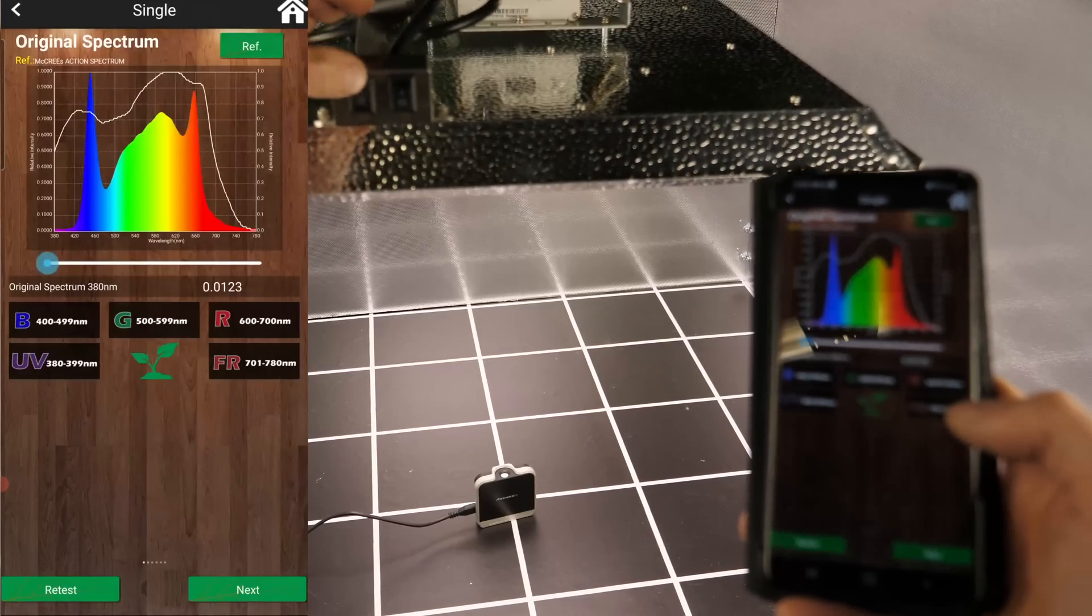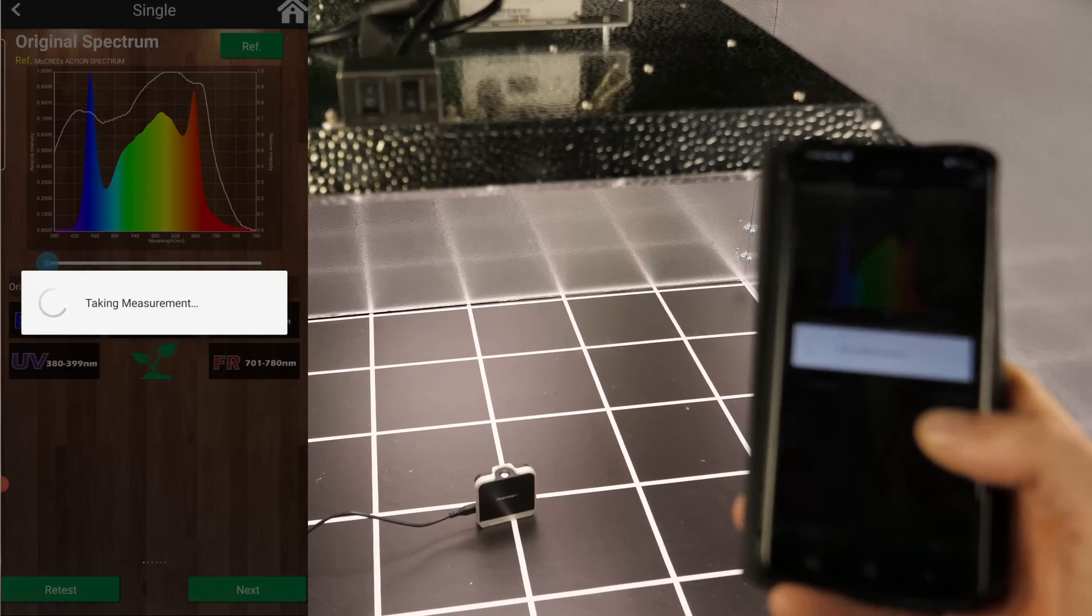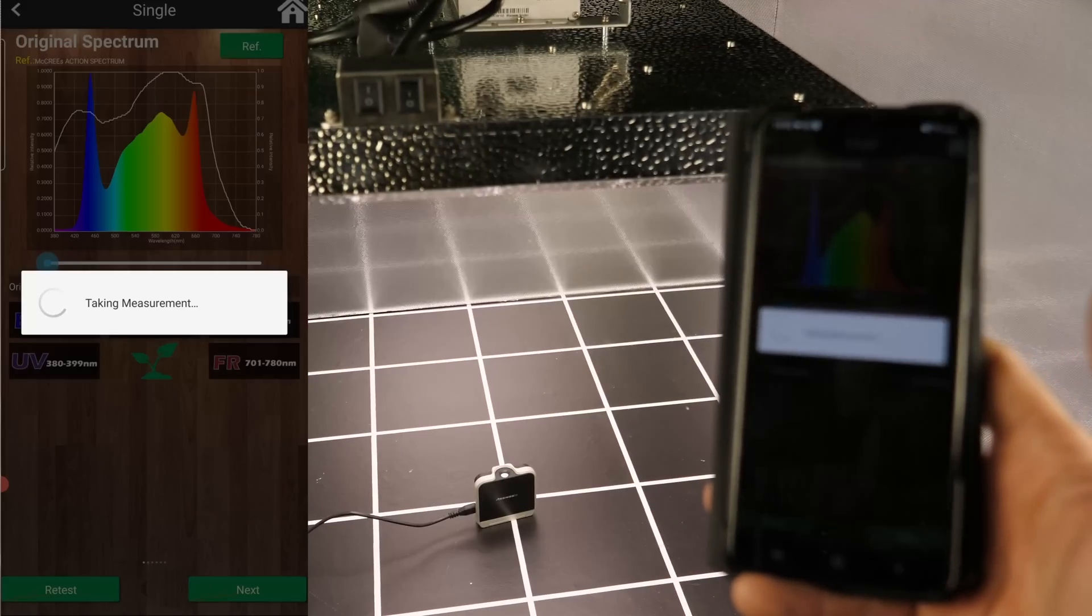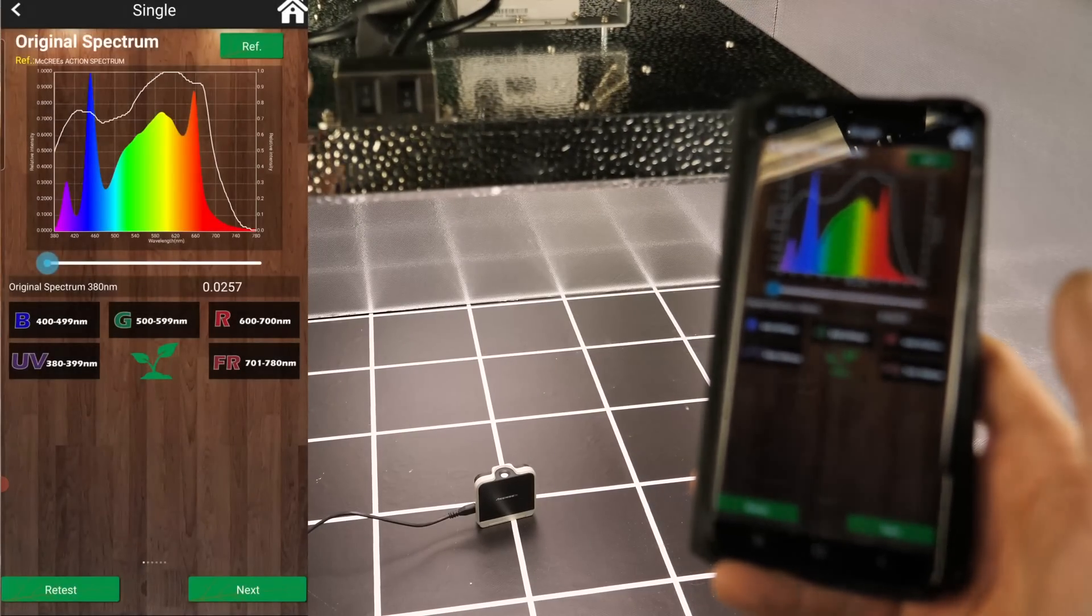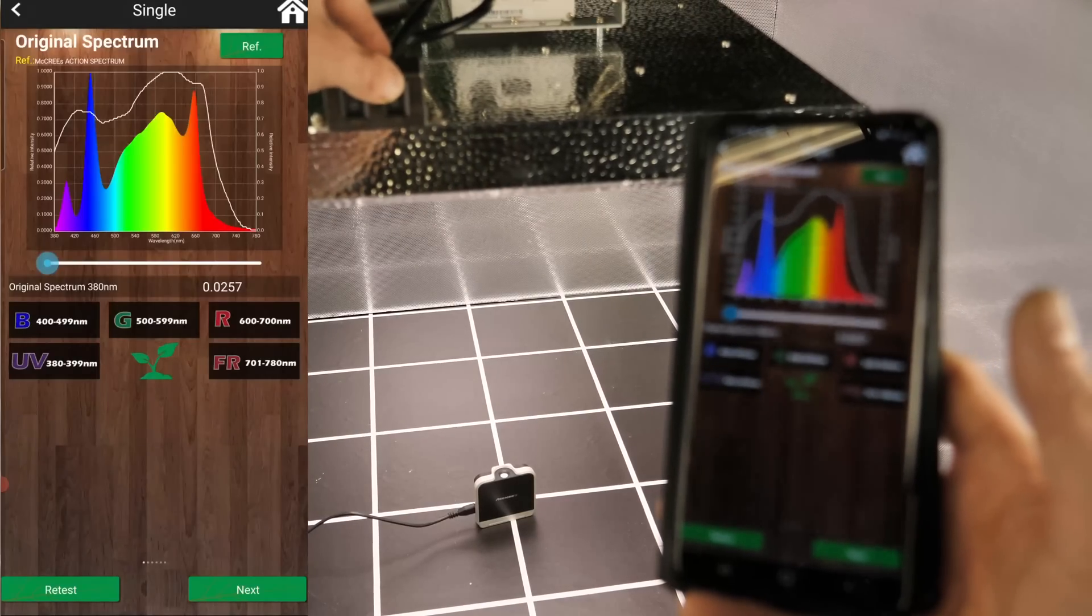And then you flick the other switch and you've got infrared, another 15 watts of infrared. So you can widen and broaden out the spectrum with UVA and infrared, which is a nice feature for this price particularly.